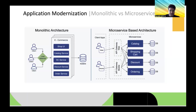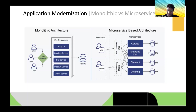With a monolith, you have to understand the complexity and the correlation between all the applications together to make changes, which is very time-consuming. But in the microservices architecture, client requests come through an API gateway, which interacts with each individual microservice. Microservices can scale independently, are loosely coupled, and each interacts with its own individual database, making request retrieval very fast.